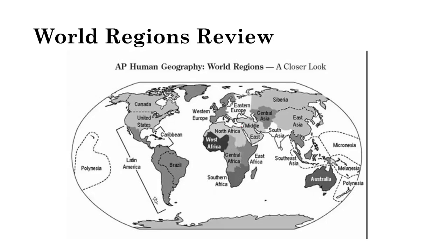College Board's world regions differ from common usage: they call Canada, United States, and Caribbean all 'Latin America' and don't have a 'Central America.' Africa is divided into West Africa, North Africa, Central Africa, East Africa, and Southern Africa. The Middle East, Western Europe, Eastern Europe, Central Asia, East Asia, South Asia, and Southeast Asia are all separate regions, along with island regions: Micronesia at the top, Melanesia in the middle, and Polynesia at the bottom.